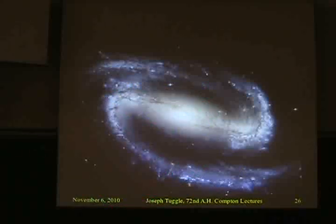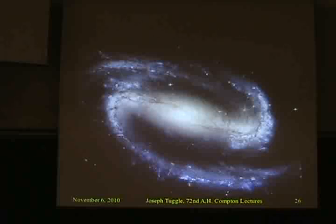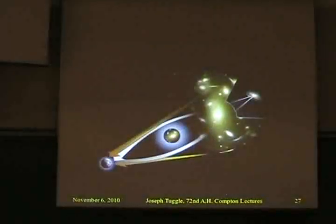One way you can get a handle on dark matter is through an interesting feature of Einstein's version of gravity called gravitational lensing. The idea is that light from distant galaxies can get bent if it passes near something massive. This was actually one of the ways Einstein's theory of relativity was confirmed — he predicted that if you look at the positions of stars, they'll appear in a certain location, but during a solar eclipse, when the sun's light is masked, you can see that the apparent position of those stars has changed. Light passing near the sun gets bent a little bit.